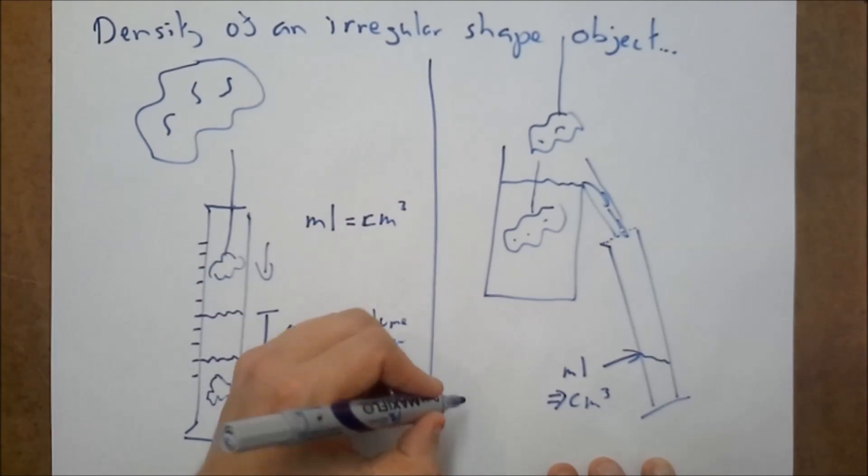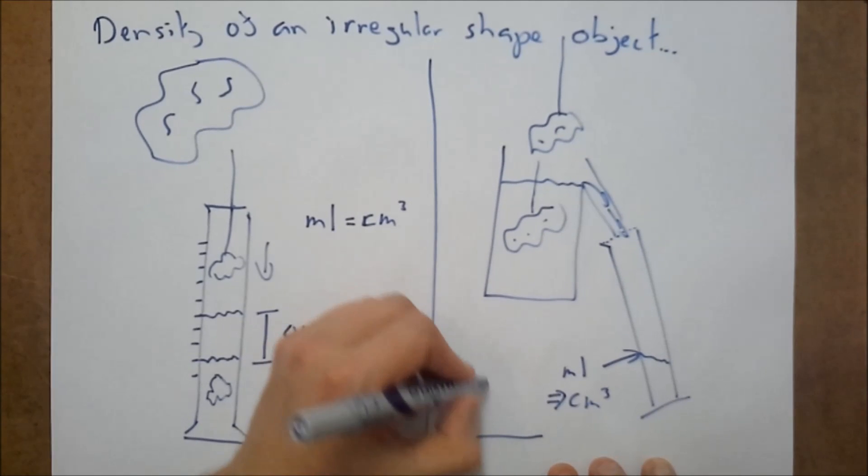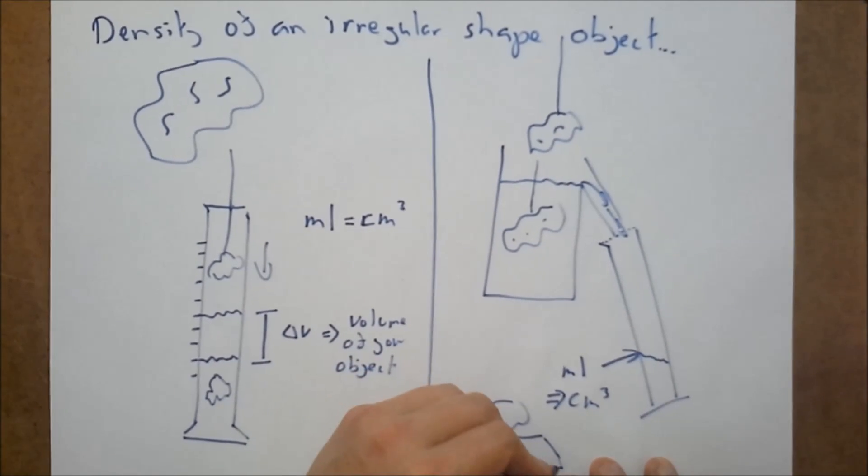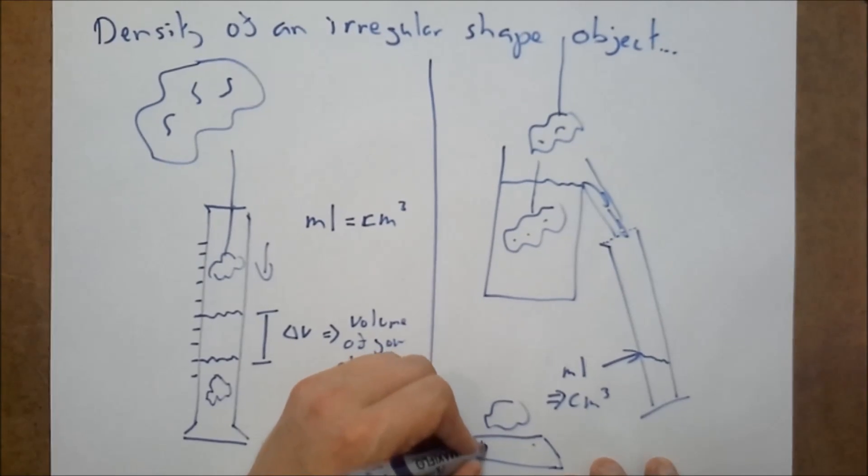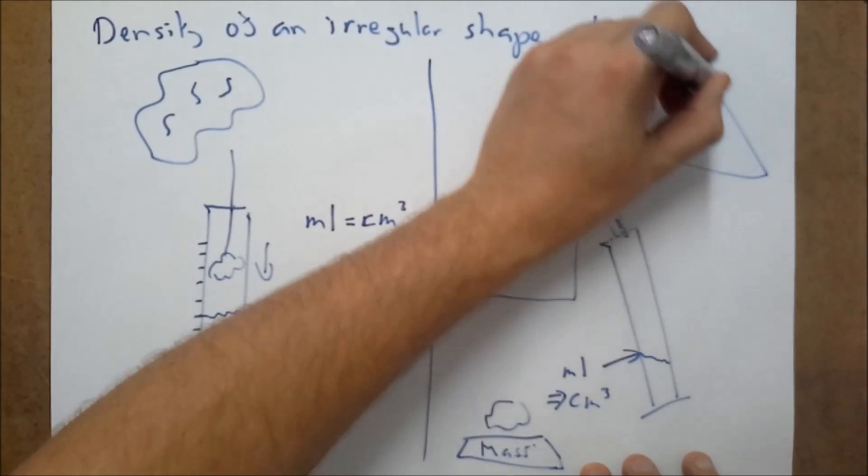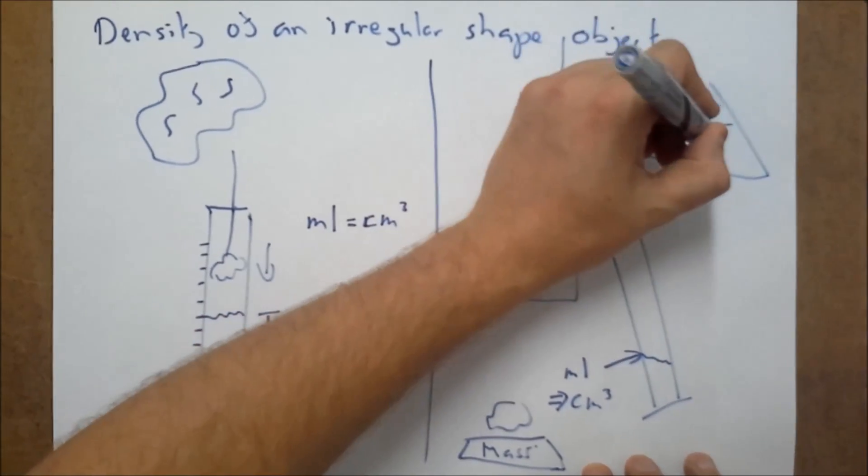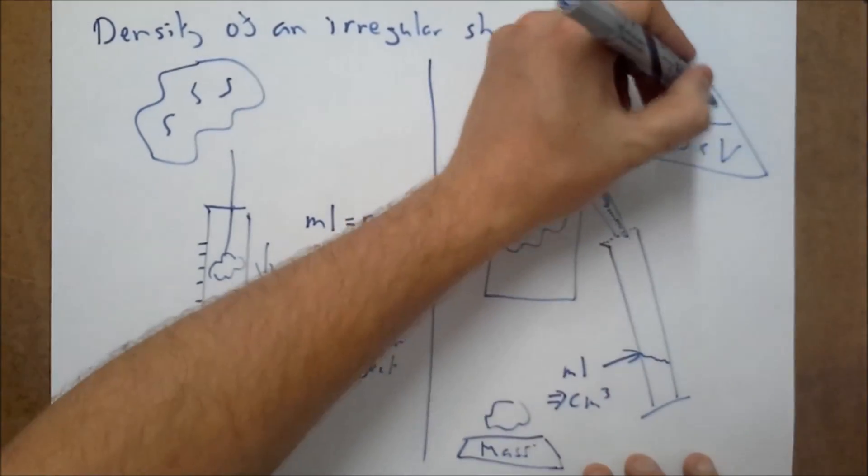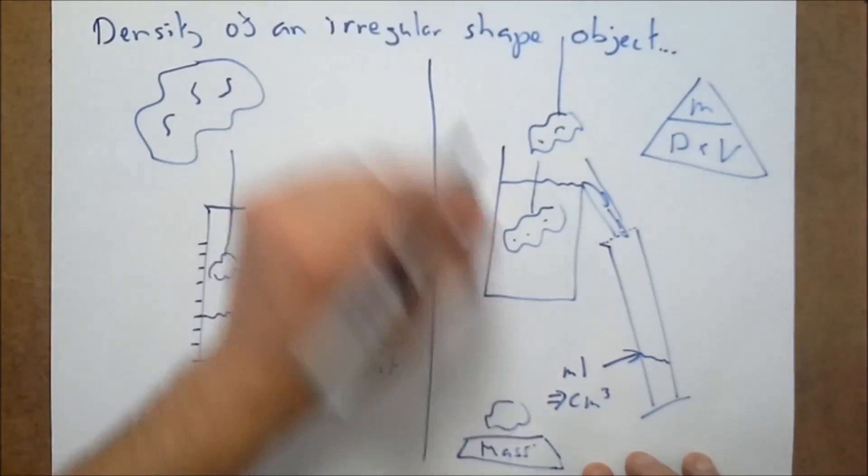Then you just go away. Measure your little object on maybe a digital scale or something like that. So you can work out the mass. Then just go back to your triangle. You know the mass. You know the volume. You can work out the density. Mass divided by volume is going to give you the density.